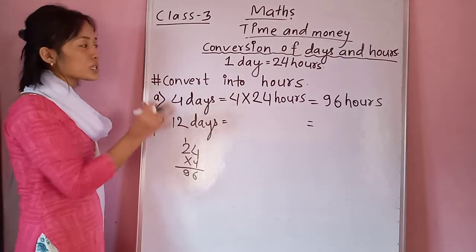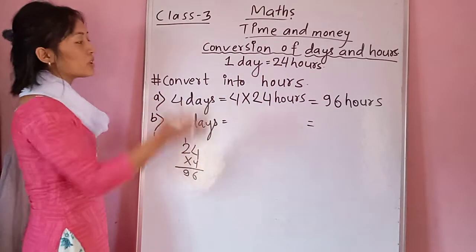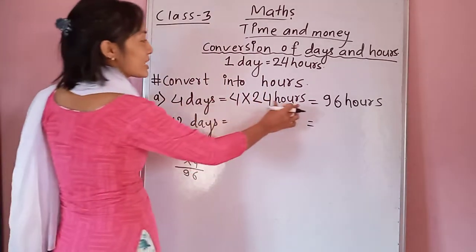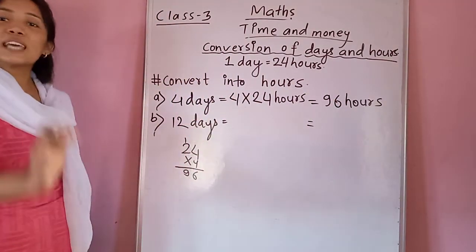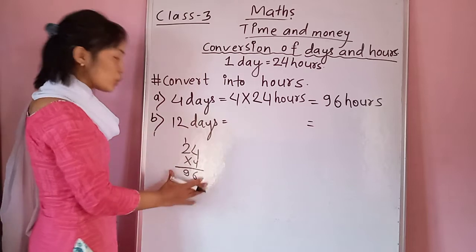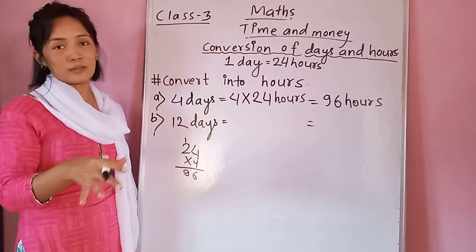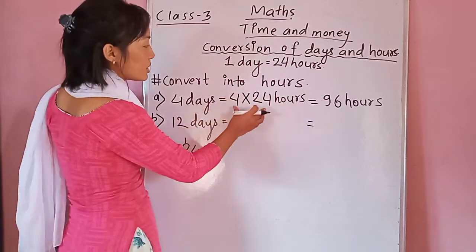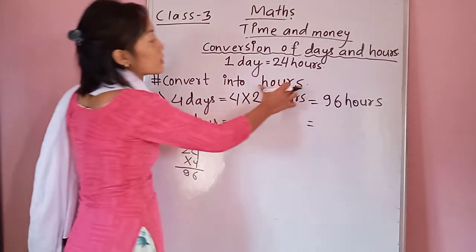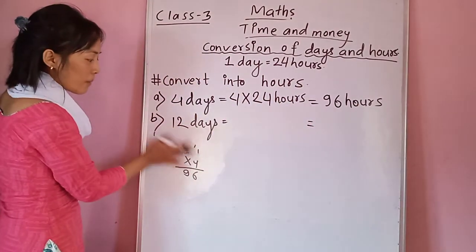You should focus on whether you have written the right unit or not. After multiplying four by 24, if you again write 'days' instead of 'hours,' your solution will be wrong and you will get zero marks. After doing the multiplication, focus on the unit. Since the question tells you to convert into hours, you must write 'hours' at the end.